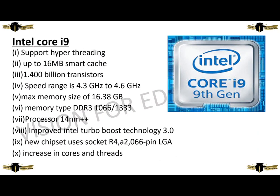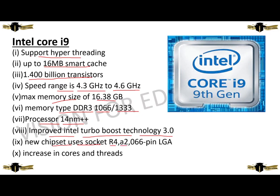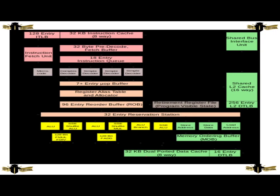Now we are going to discuss about Intel Core i9. It supports hyper-threading, up to 16 MB smart cache, 1.4 billion transistors, speed ranging from 4.3 GHz to 4.6 GHz, maximum memory speed of 1833 MHz, memory type DDR3-1066/1333, processor socket R4 LGA 2066-pin, improved Intel Turbo Boost technology 3.0, new chipset using socket R4 A2-066 pin LGA, increasing core count and threads. This is the architecture of Intel Core i9.